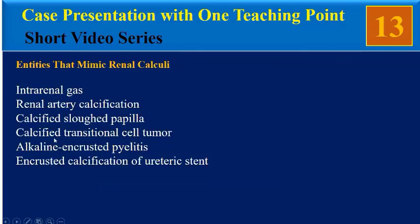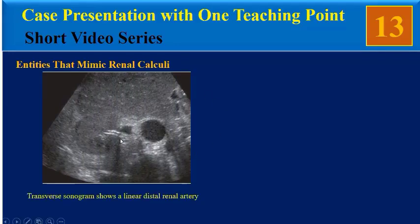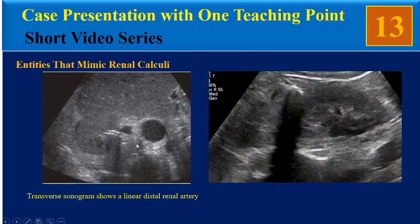Another differential diagnosis is renal artery calcification. As you can see in this sonogram, we can see parallel linear calcification related to a linear branch of the renal artery. Renal artery calcifications are usually located in the renal hilum, not in the periphery. Our patient is not compatible with this entity.